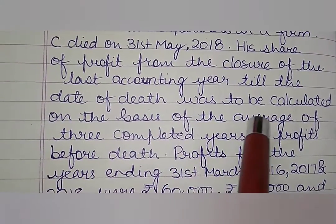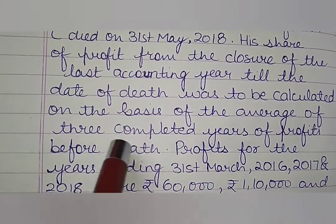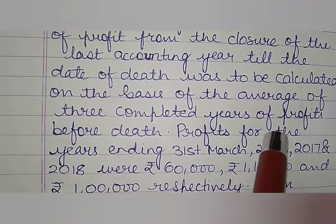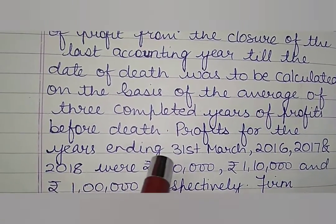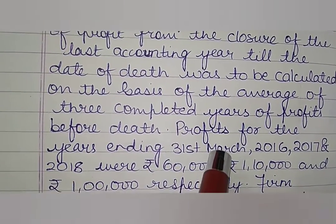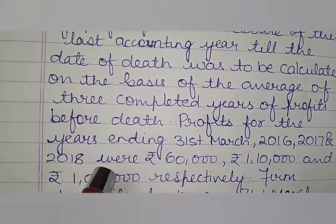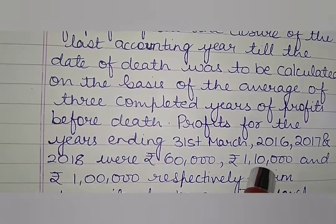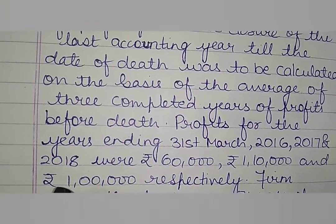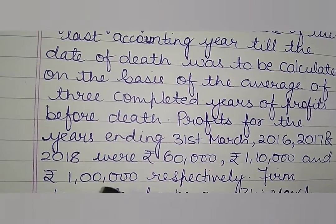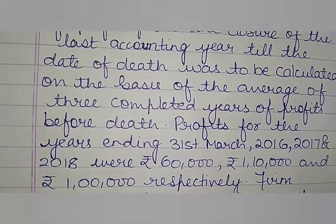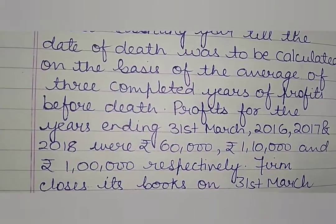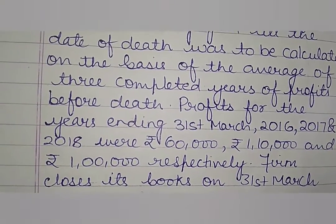On the basis of the average of 3 completed years of profit before death, profit for the years ending 31st March 2016, 2017 and 2018 were Rs. 60,000, Rs. 1,10,000 and Rs. 1,00,000 respectively. The firm closes its books on 31st March every year.